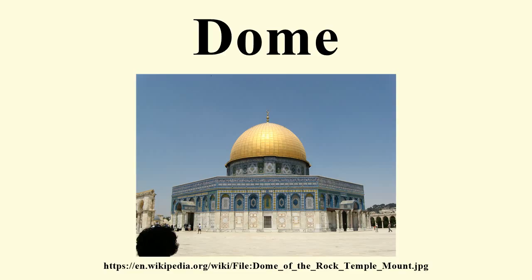As with arches, the springing of a dome is the point from which the dome rises. The top of a dome is the crown. The inner side of a dome is called the intrados, and the outer side is called the extrados. The haunch is the part of an arch that lies roughly halfway between the base and the top. The word "cupola" is another word for "dome" and is usually used for a small dome upon a roof or turret.